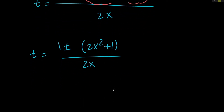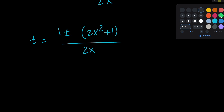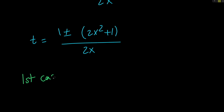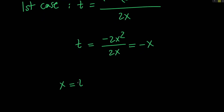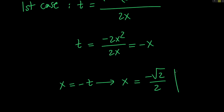This means that we have two cases for the value of t. In the first case, t equals 1 minus the quantity 2x squared plus 1, all divided by 2x, which means that t is going to equal negative 2x squared over 2x, which simplifies to negative x. So x is equal to negative t. And since t is root 2 divided by 2, we can say that x is equal to negative root 2 divided by 2. So this is our first and only real solution of our equation.